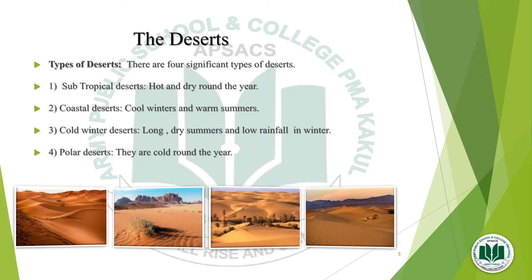Now we will discuss the types of deserts. There are 4 significant types. Number 1 is subtropical deserts — they are hot and dry around the year with no rain. Then coastal deserts — cool winters and warm summers. Then cold winter deserts — long dry summers and low rainfall in winter. Then we have polar deserts — they are cool around the year. Here you can see different pictures of deserts.